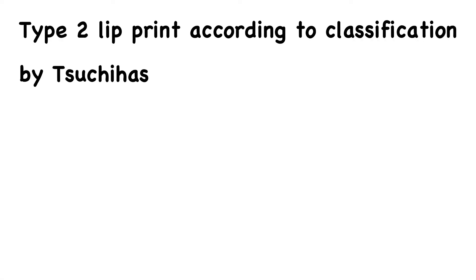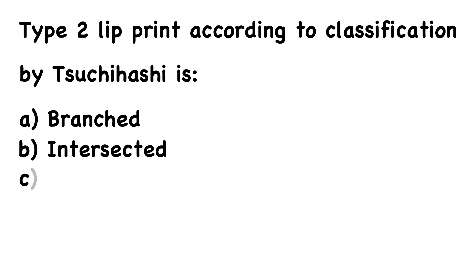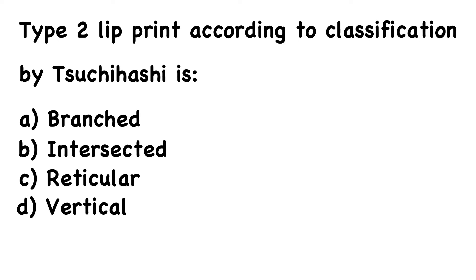Type 2 lip print according to classification by Tsuchihashi is — the options are: A. Branched, B. Intersected, C. Reticular, D. Vertical.